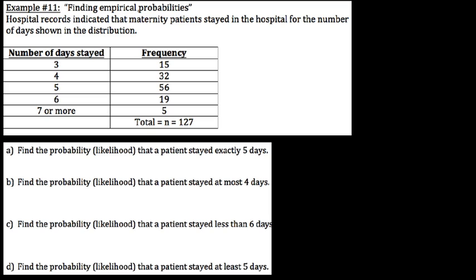Let's kick off a couple more here. Finding empirical probabilities. This time we have maternity records. Hospital records indicated that maternity patients stayed in the hospital for a number of days shown in this distribution. Let's say we worked in the maternity ward, and we're trying to always improve our performance, and maybe performance is getting people out of the hospital within seven days comfortably.